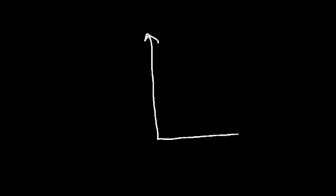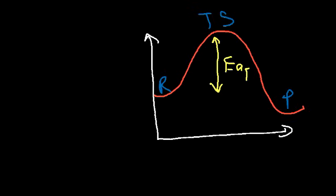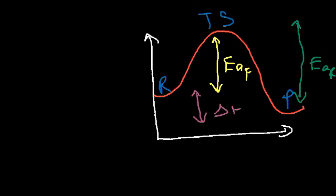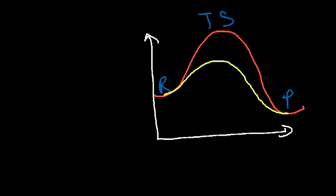Let's draw a potential energy diagram. Here we have the reactants, the products, and the transition state, also known as the activated complex. The forward activation energy is the difference between the energy of the reactants and the activated complex. The reverse activation energy is the difference between the activated complex and the energy of the products. Delta H, the enthalpy of the reaction, is the products minus the reactants. If we add a catalyst to this reaction, a catalyst lowers the activation energy by providing an alternative pathway to get to the products.